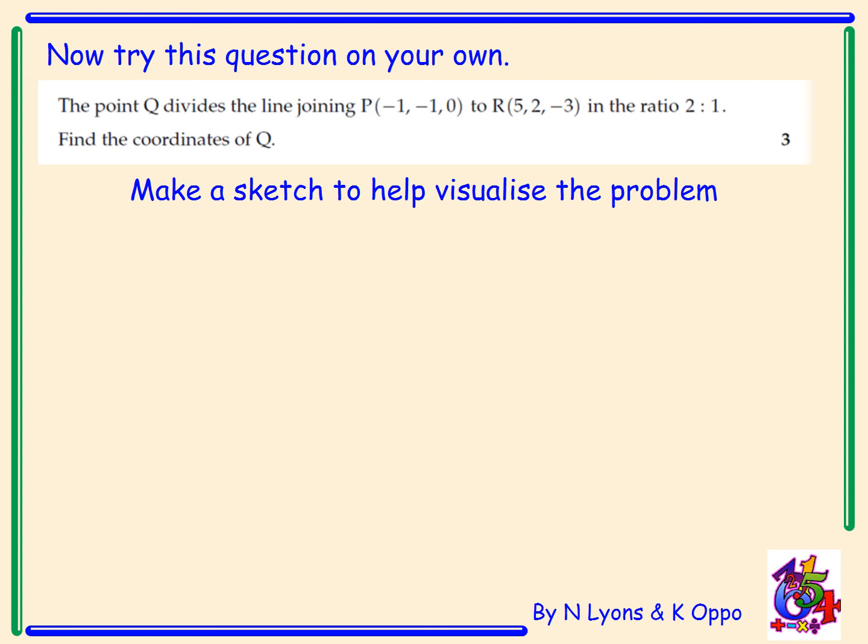Right, now try this question on your own. The point Q divides the line joining the point P(-1, -1, 0) to the point R(5, 2, -3), and it divides it in the ratio 2 to 1. Find the coordinates of Q. This is worth three marks, and this is an example of an old past paper question. Before you get started, why don't you make a sketch to help visualize the problem? I've got you started now. Draw your sketch. Visualize the problem. Now pause this video and take time to just try it on your own. I'll go through the worked example in a couple of seconds once you're finished. So put me on pause. Attempt it on your own. Good luck.